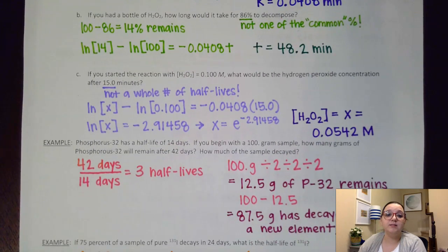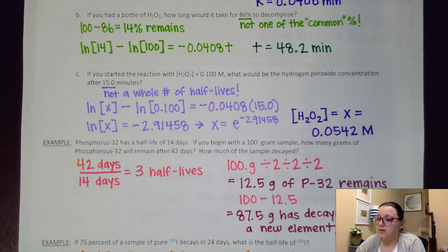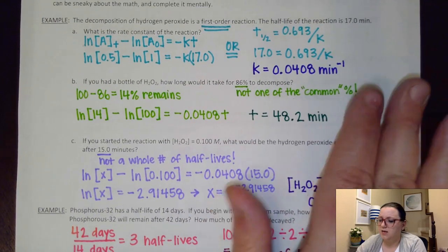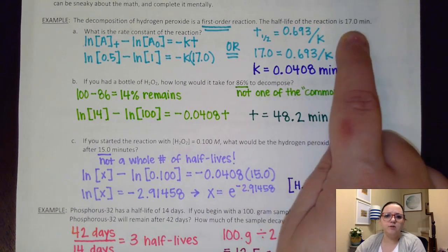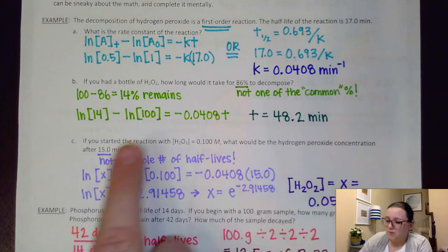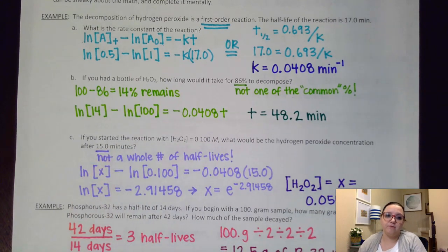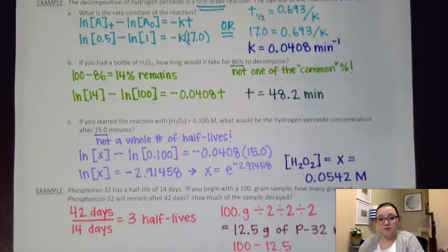If each half-life is 17 minutes, and I'm going through almost three of those, that means my value should be almost to 51 minutes. And we see it's pretty close to 51 minutes. It's 48.2, so that's not all that far off. The next one, part C, says if you started the reaction with 0.1 molarity, what would be the hydrogen peroxide concentration after 15 minutes? That half-life time was 17 minutes. So this is going to get cut in half every 17 minutes. But I'm not quite there.